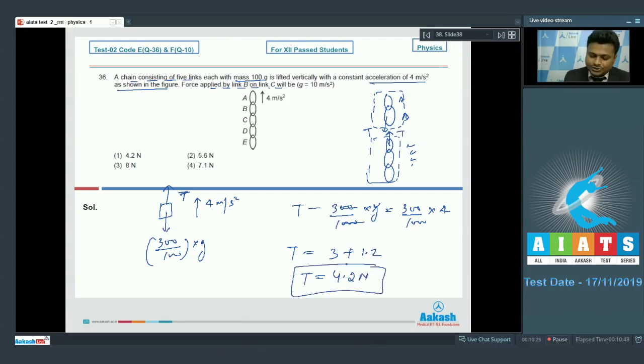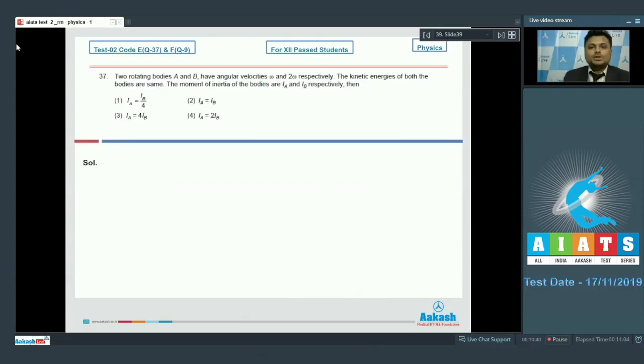Moving on to the next, that is number 37. Here is question number 37. Two rotating bodies A and B having angular velocities omega and 2 omega respectively. The kinetic energy of both bodies are same. The moment of inertia of bodies IA and IB respectively will be what? We have to calculate their ratio of moment of inertia. Since they have same kinetic energy, it means we can write half IA omega squared will be equal to half IB 2 omega squared.